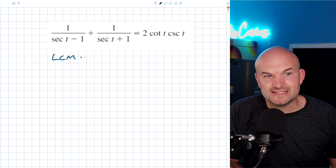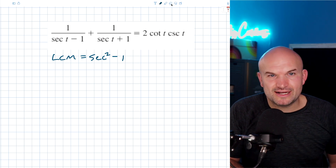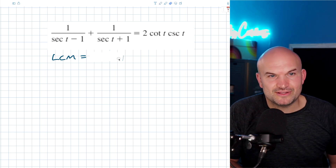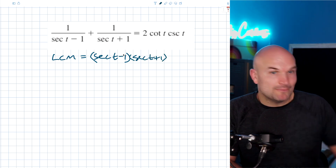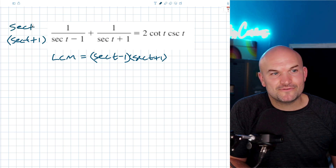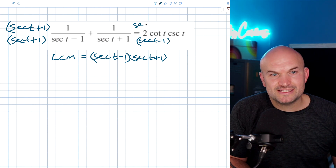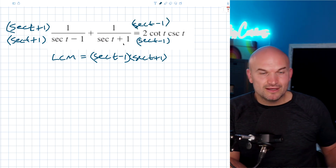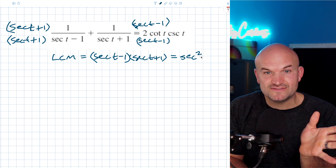My least common multiple on my denominators is going to be secant of t minus one times secant of t plus one. To get the common denominator on the first fraction, I need to multiply by secant of t plus one over secant of t plus one. And on the second fraction, I need to multiply by secant of t minus one over secant of t minus one. When I multiply this out, this gives me secant squared of t minus one.